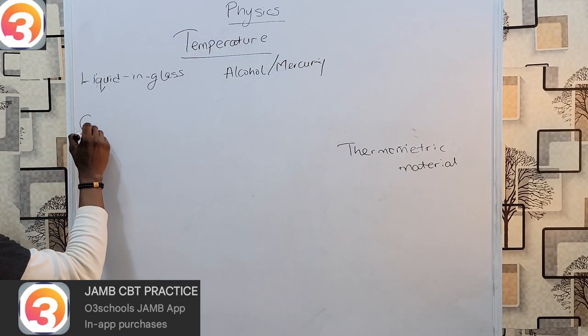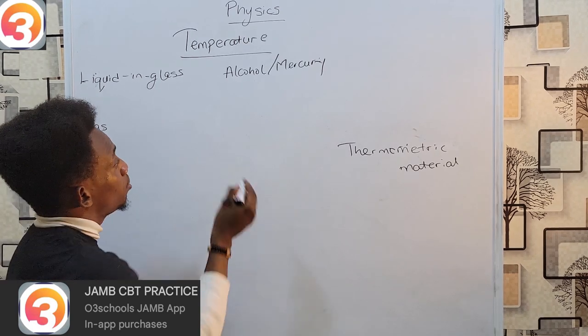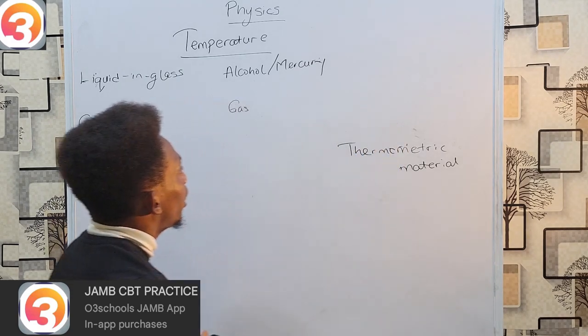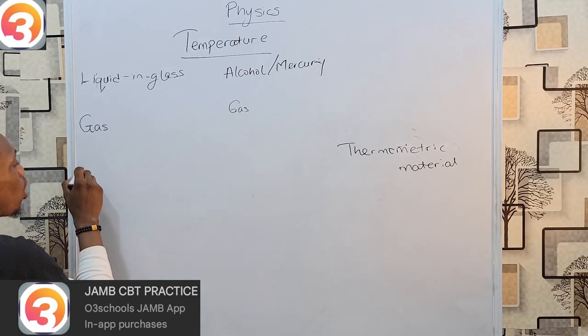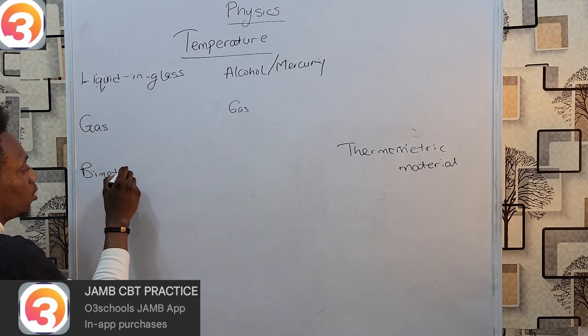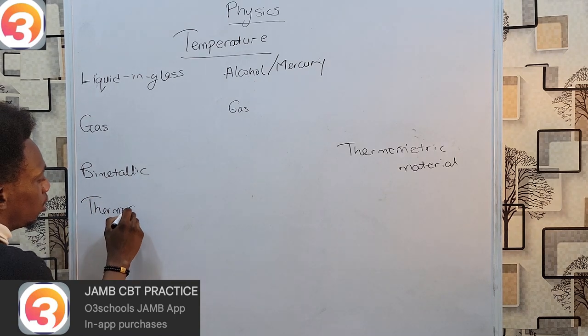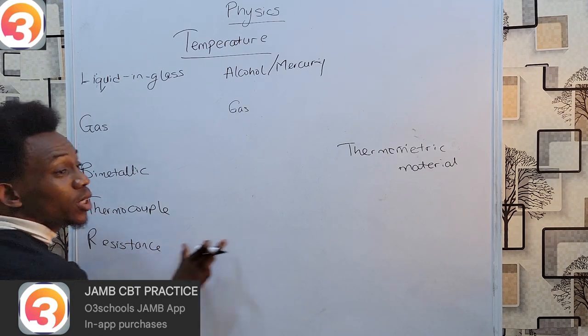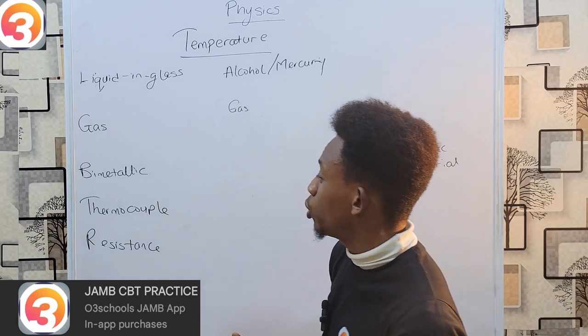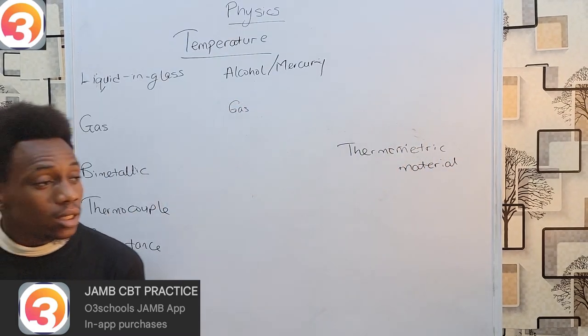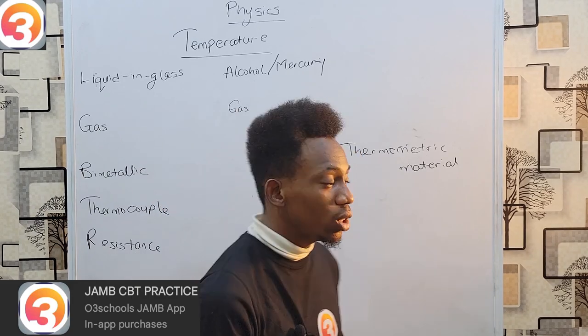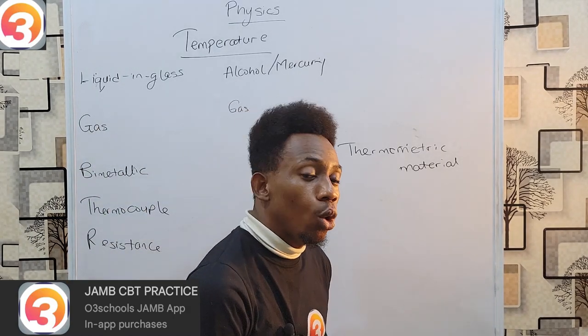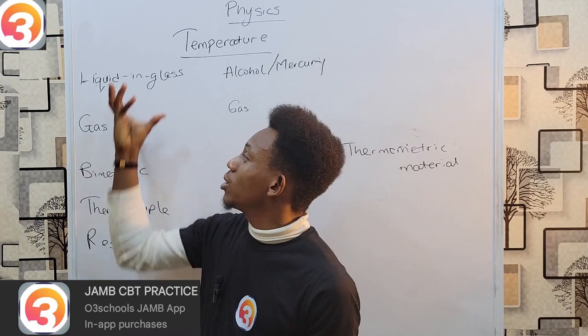Other than liquid in glass, we also have gas thermometers. Gas thermometers make use of any gas and they measure the change in the pressure of this gas at constant volume. There are others: you have your bimetallic strip, thermocouple, and resistance thermometer. Resistance thermometer measures the change in resistance with temperature. The thermocouple measures the change in potential difference at the junction between two dissimilar metals, while bimetallic thermometers measure temperature due to the difference in expansion of two dissimilar metals.